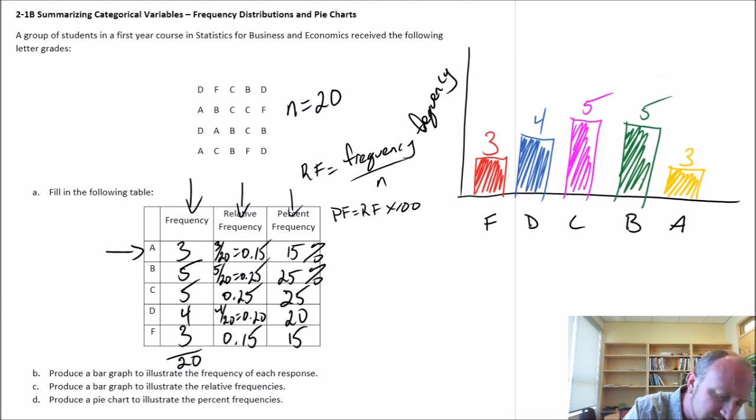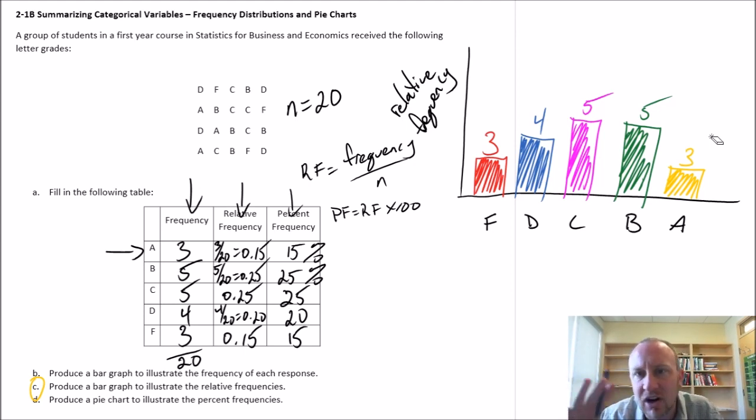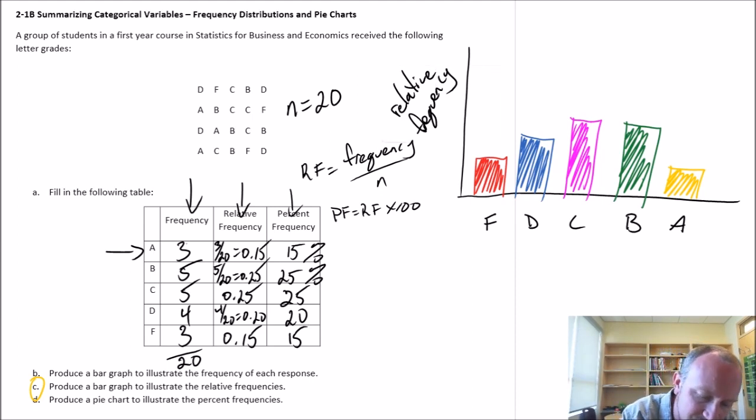And now if we move on to part C, produce a bar graph to illustrate the relative frequencies. All we're doing now is changing the scale on the x-axis. So instead of frequency now I have relative frequency. I don't have to redraw any of the bars because their size relative to one another is not going to change. So I don't have to redraw the bars but I do have to change my numbers because of course the scale on the y-axis, now it's no longer a three as I have here but it's a 0.15 as I have here.